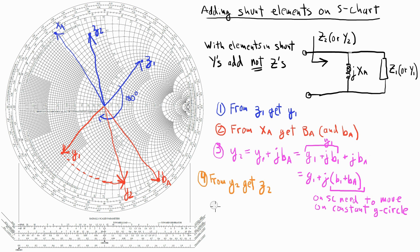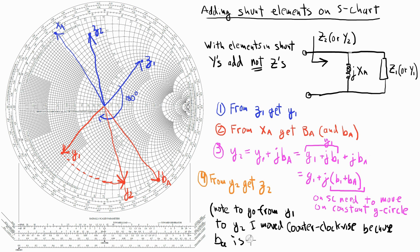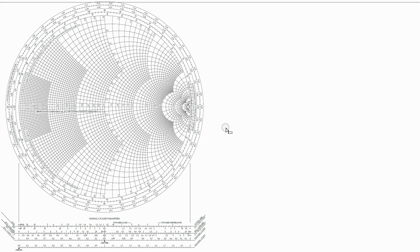When I went from Y1 to Y2, I moved counterclockwise on the Y chart, precisely because the susceptance that I was adding, BA, was a negative number. Which is why I stayed on a constant G circle and moved deeper into the bottom half of the Smith chart — the negative half. So I just used the Smith chart to find the input impedance of an RF circuit that contained a shunt impedance. The technique involved switching between the Y chart and the Z chart.